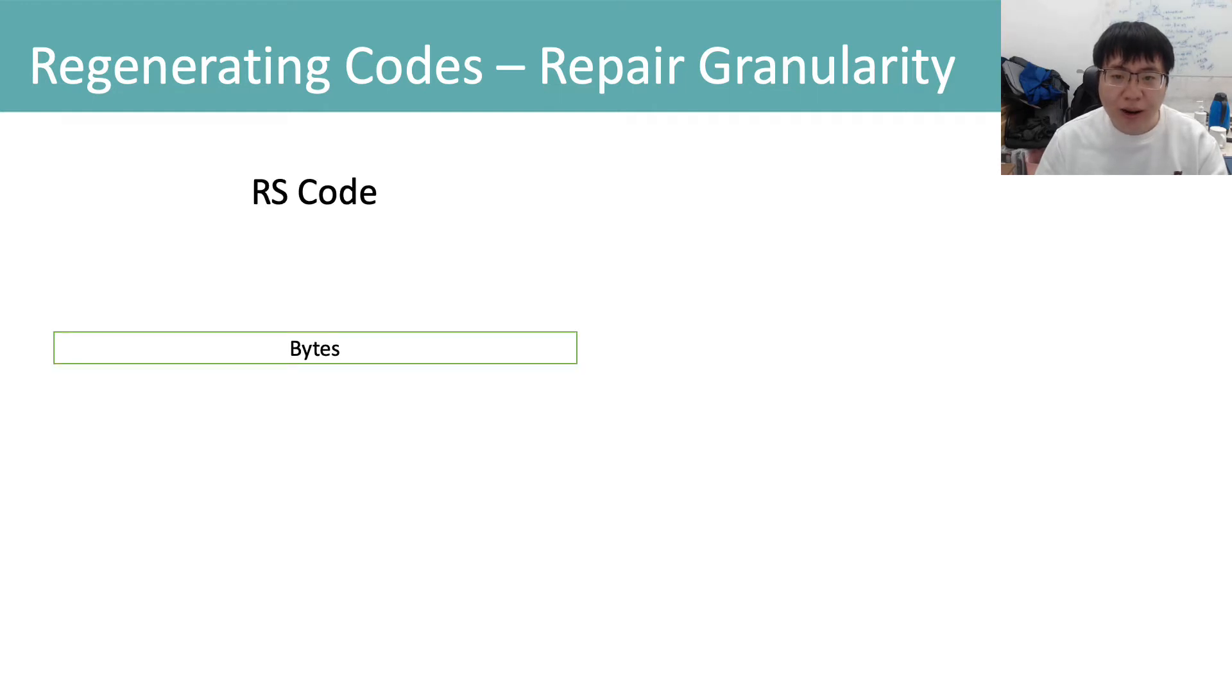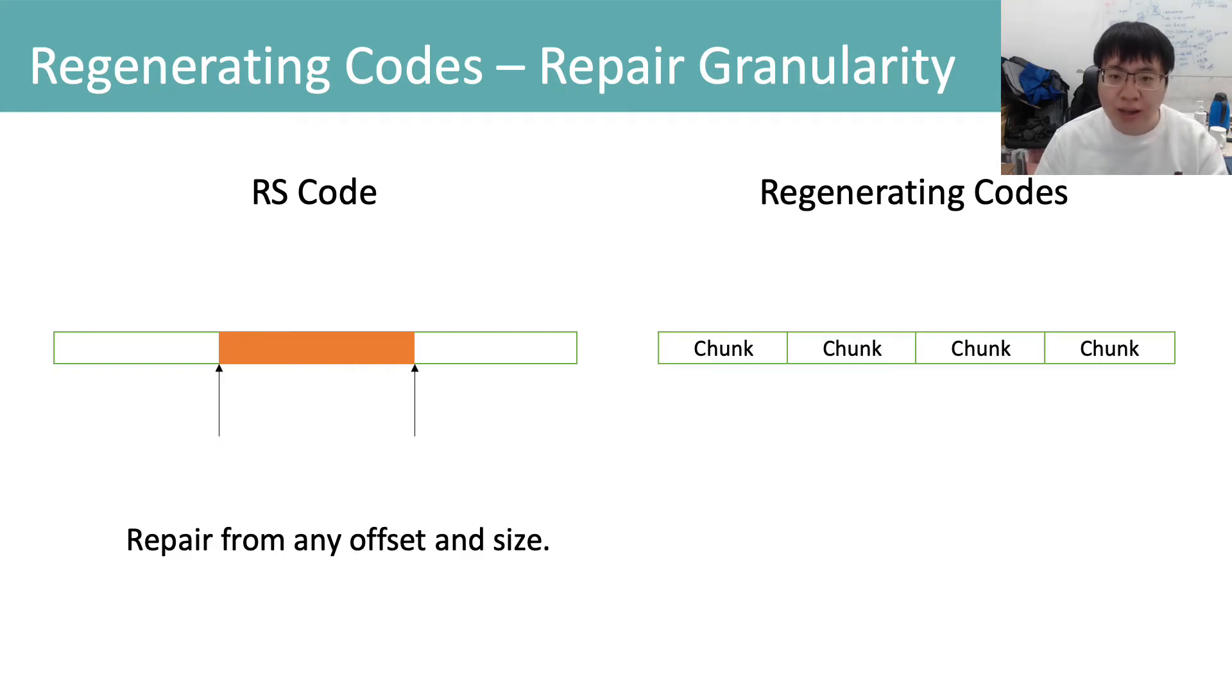Erasure codes like RS code repair has a granularity of bytes, so they can repair from any offset and size. Regenerating codes can only repair at the granularity of chunks.